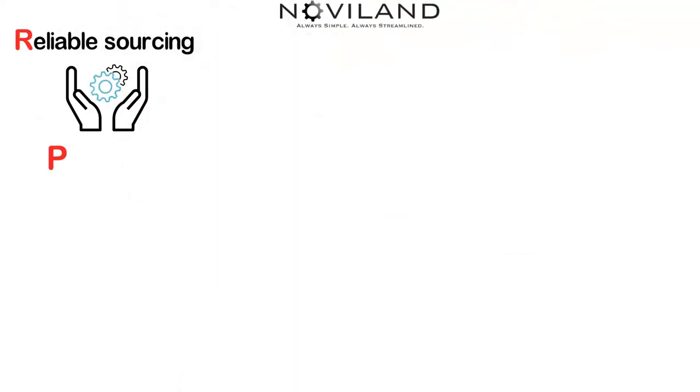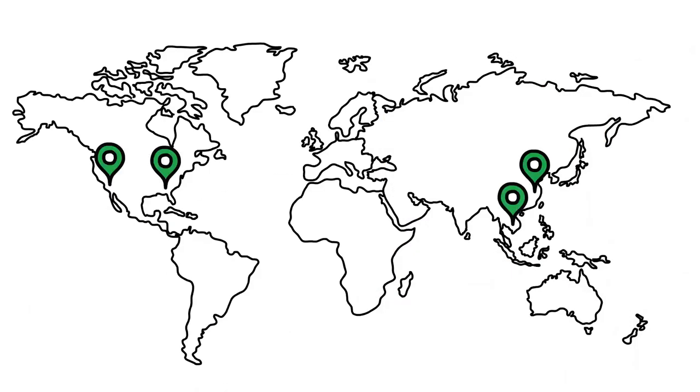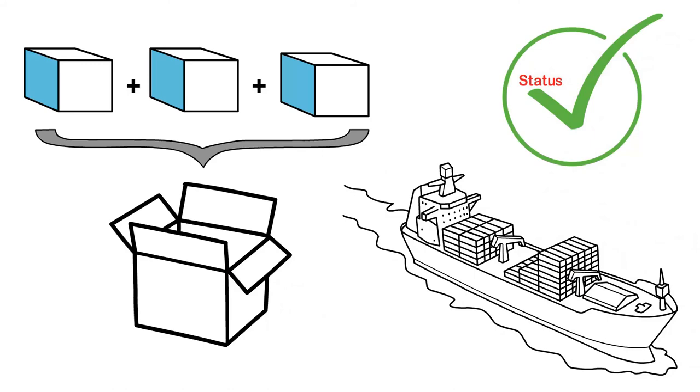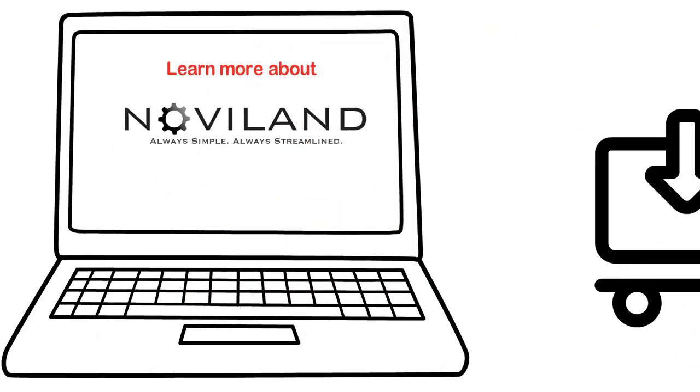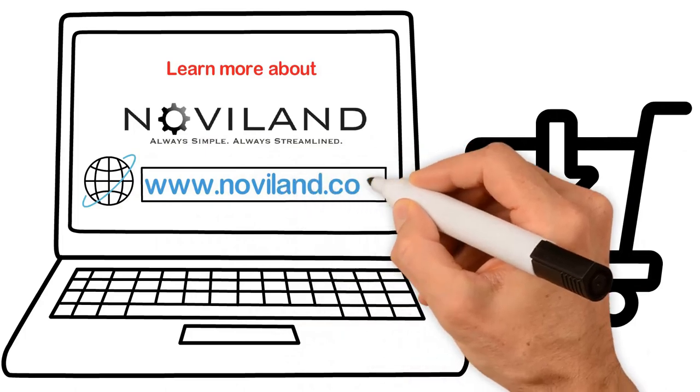Noviland offers reliable sourcing, purchasing, and shipping solutions from thousands of factories overseas, complete with order consolidation and continuously updated statuses for each shipment. Learn more about Noviland's end-to-end purchasing solution at www.noviland.com.